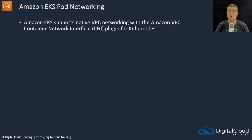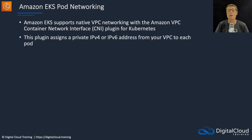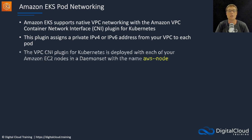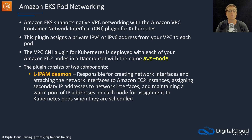Next, let's look at pod networking. EKS supports native VPC networking with the VPC Container Network Interface (CNI) plugin for Kubernetes. The plugin assigns a private IPv4 or IPv6 address from your VPC to each pod. The VPC CNI plugin is deployed with each of your EC2 nodes in a daemon set named AWS-node. The plugin has two components: the IPAM daemon, which is responsible for creating network interfaces, attaching them to instances, assigning secondary IPs, and keeping a warm pool of IP addresses on each node for assignment to pods.